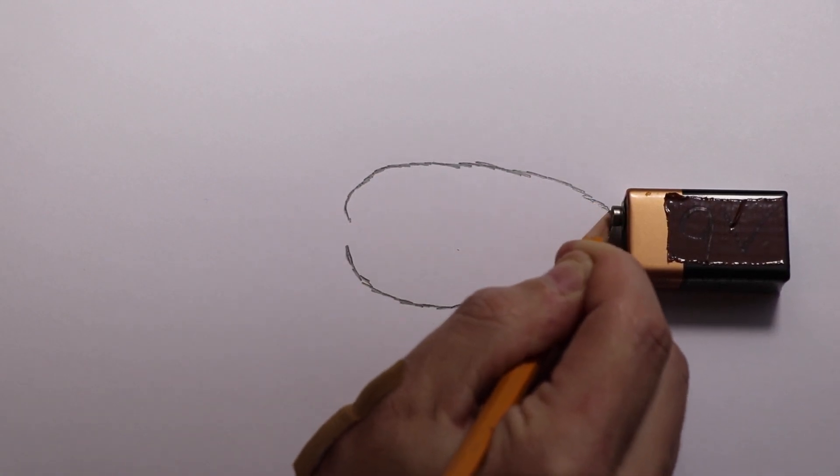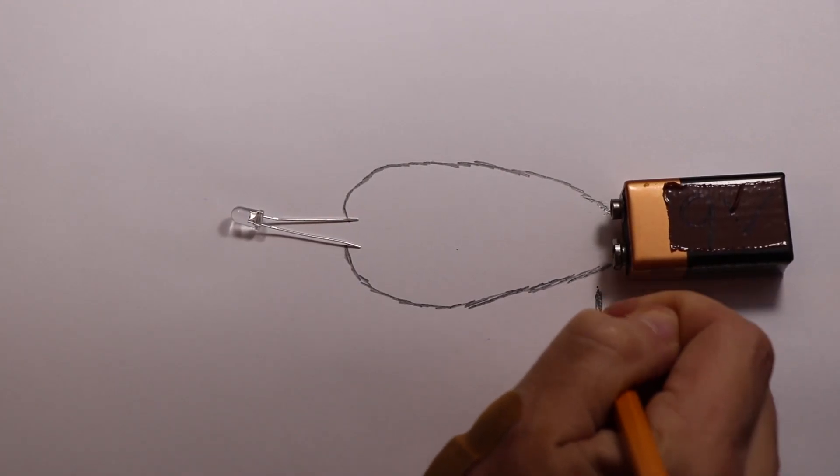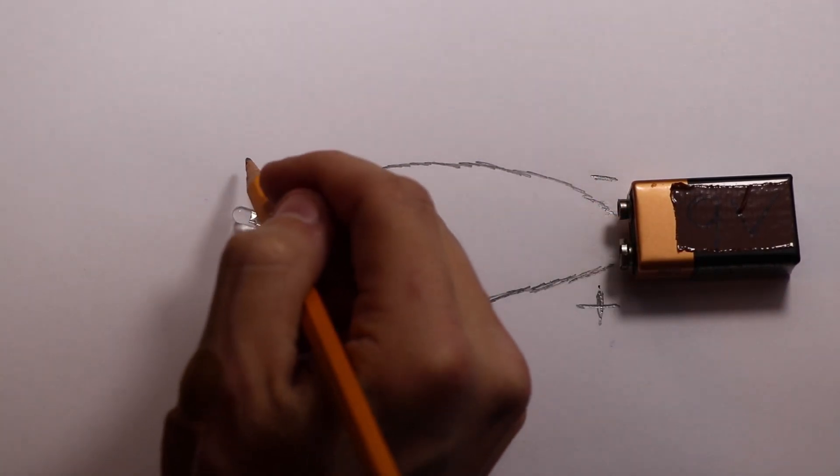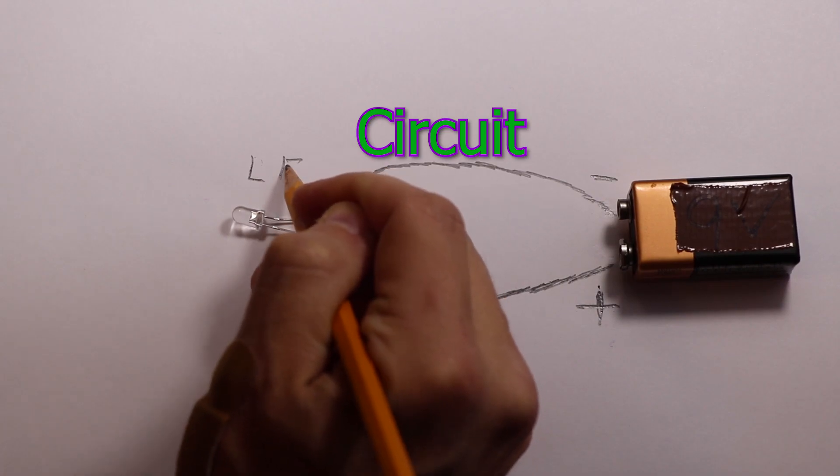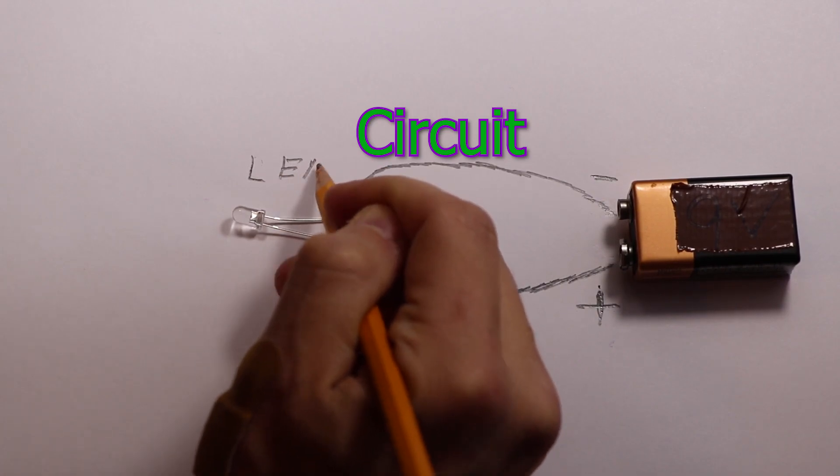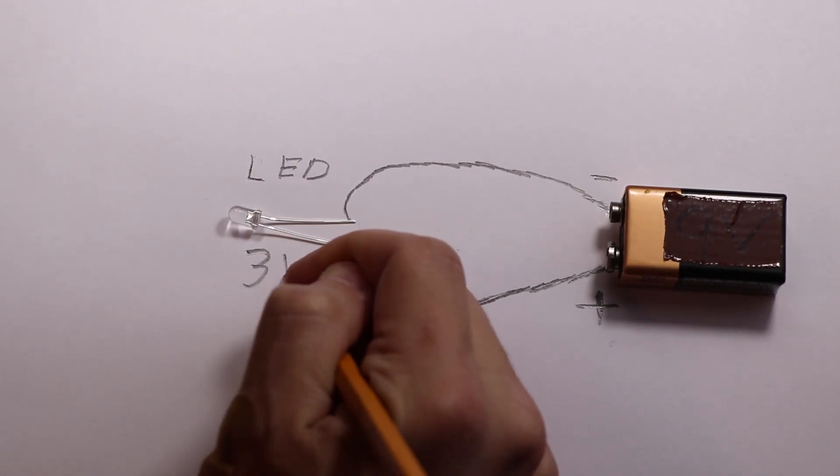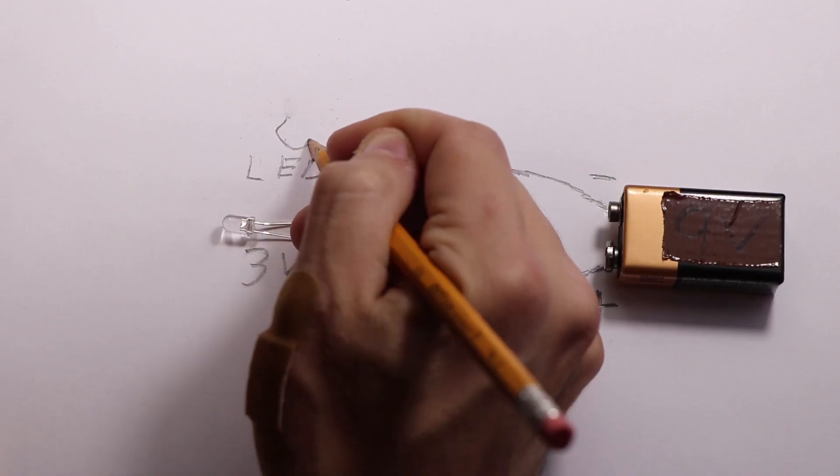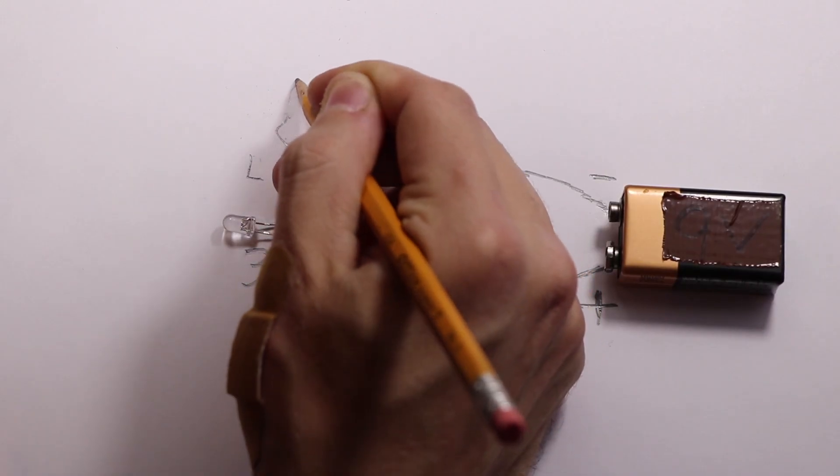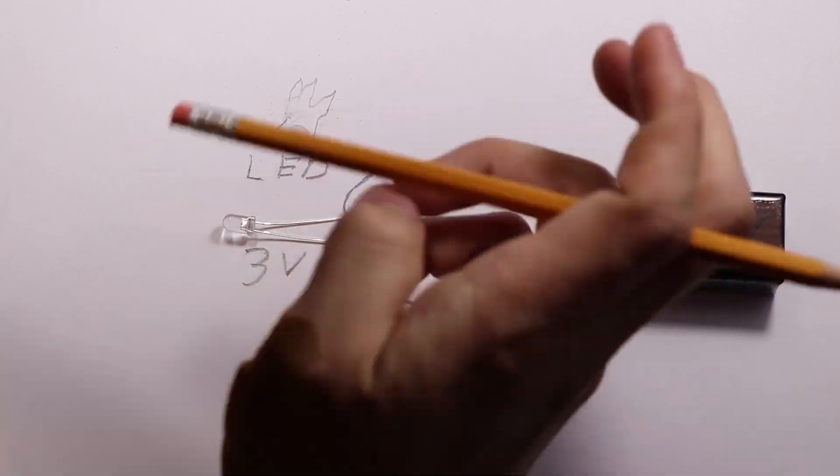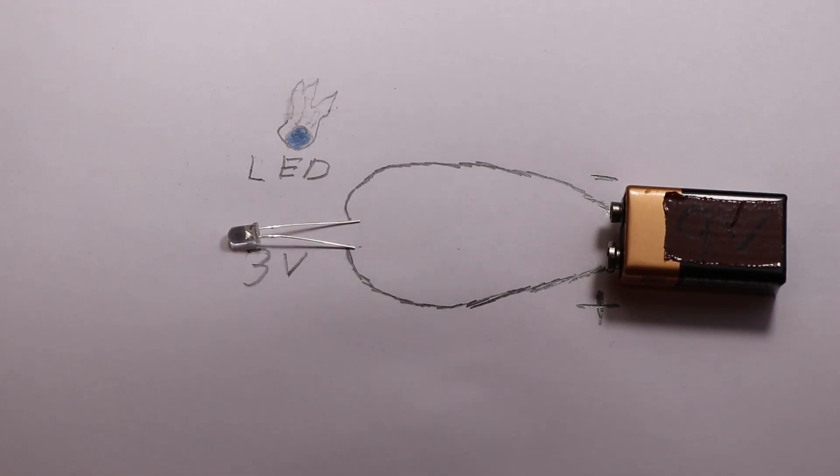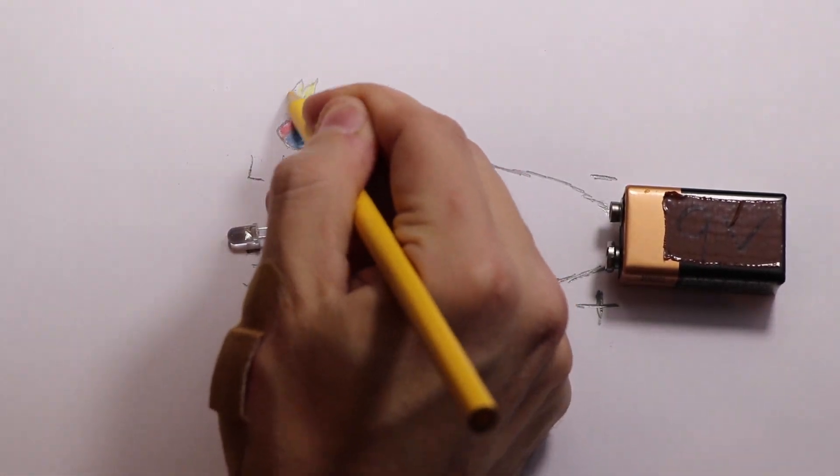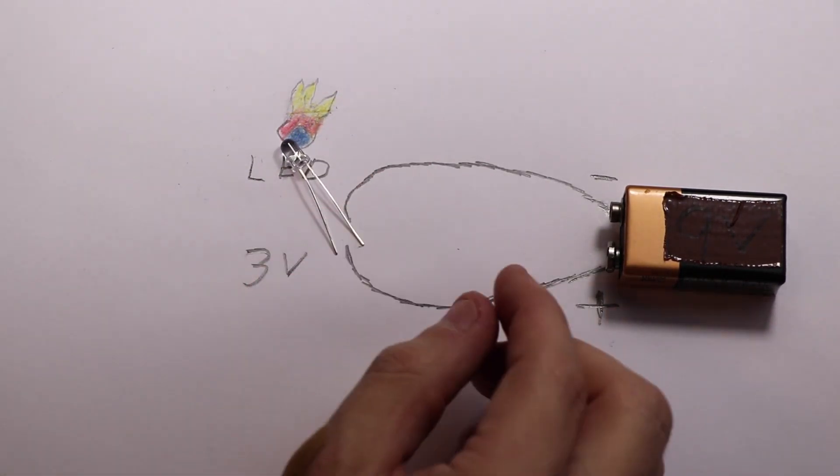You don't want to create a circuit without a device attached to draw power or else it'll begin to overheat and possibly cause a fire. I've attached an LED and as long as it can handle the voltage it should be okay, but this is a 3-volt LED and this is a 9-volt battery.